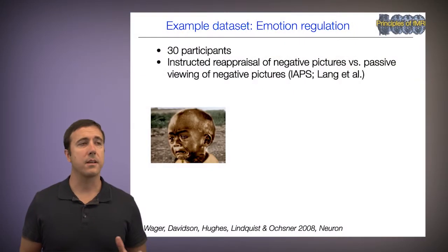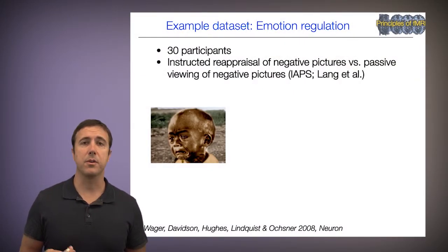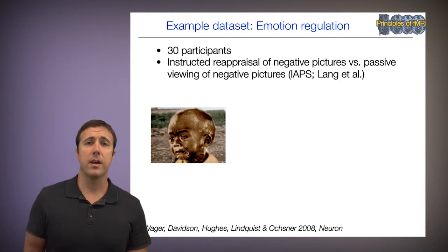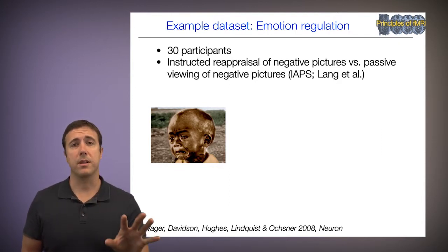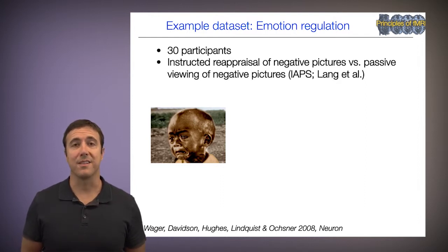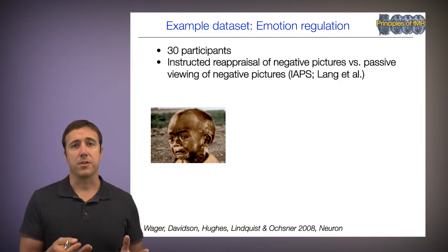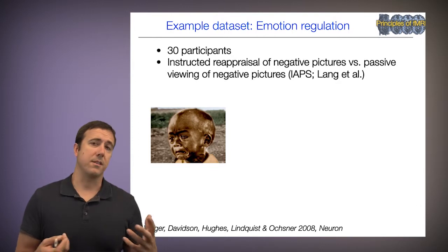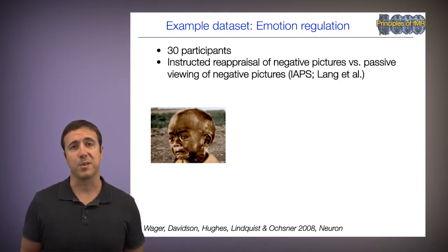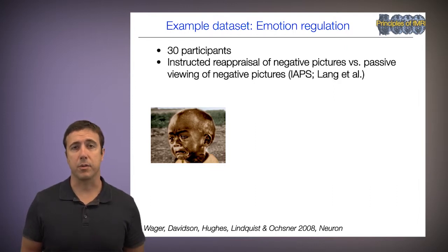The data set we're working with today is a downloadable group analysis data set of 30 participants. It's a task in which participants were instructed to view images like a really sad, crying boy, and either just view them — that's the look negative condition — or they were asked to generate a positive frame, look on the bright side. For example, imagine that the boy is crying because his mother just lost his cell phone, and he'll be better in a few minutes — nothing really serious. That's called reappraisal, or cognitive reframing.